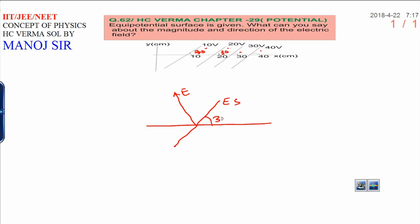This angle is given 30 degrees and if electric field is perpendicular to equipotential surface, it means this angle is 90 degrees. The total angle theta you can write that will be 120 degrees.